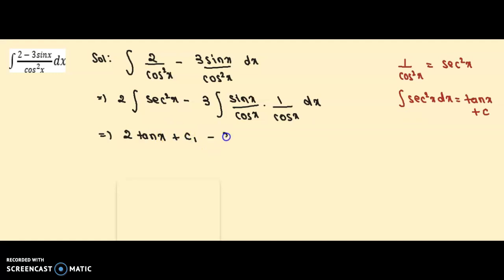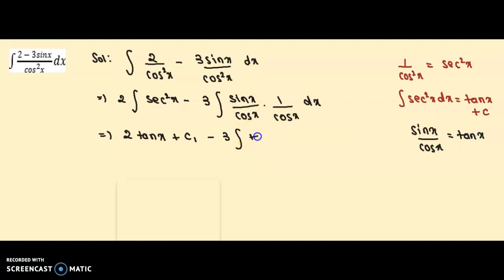Now this we write as 3 times the integration of sin x upon cos x. We all know that sin x upon cos x is tan x. And 1 upon cos x will become sec x, just as 1 upon cos²x is sec²x. So this becomes the integration of tan x times sec x.